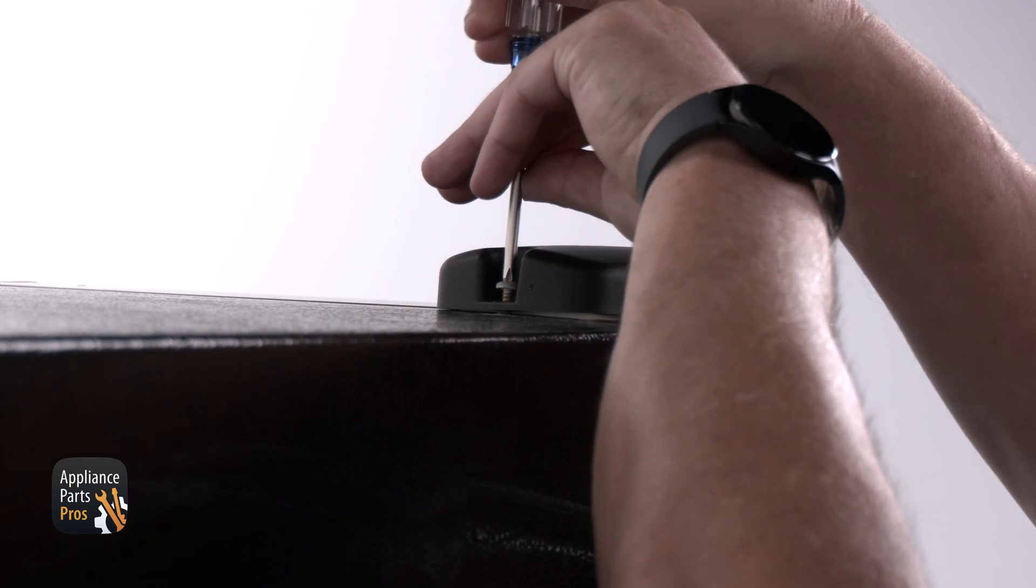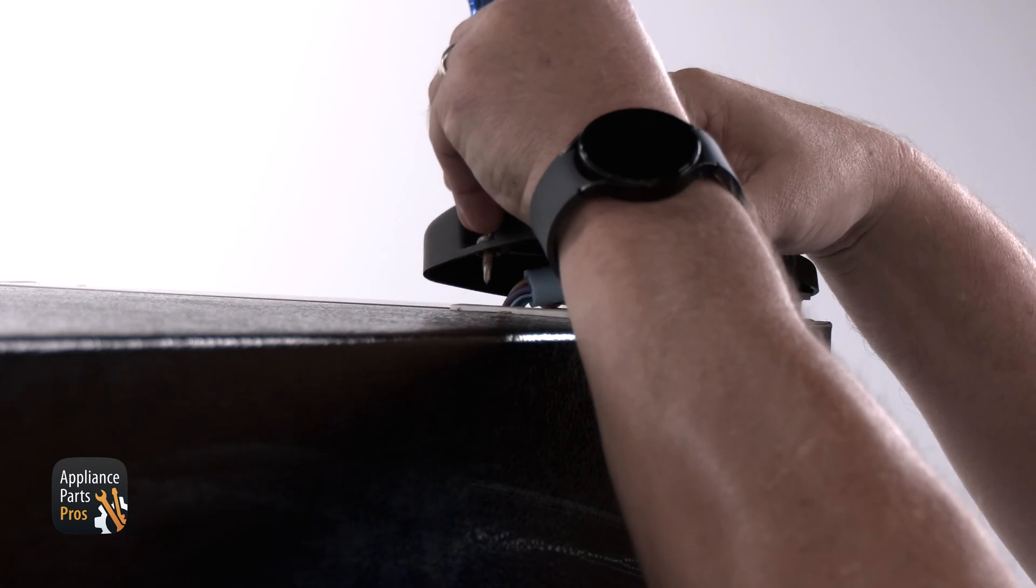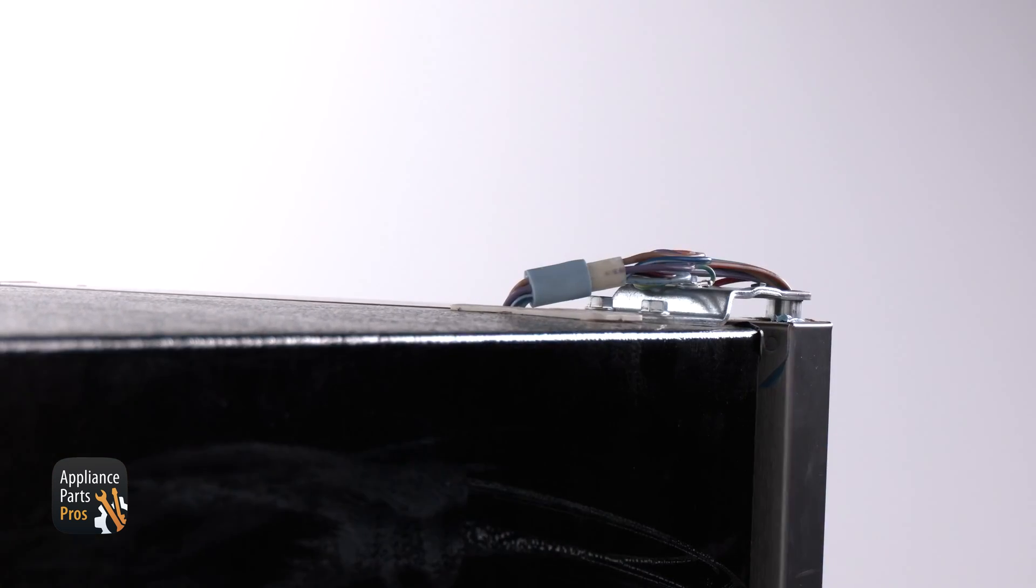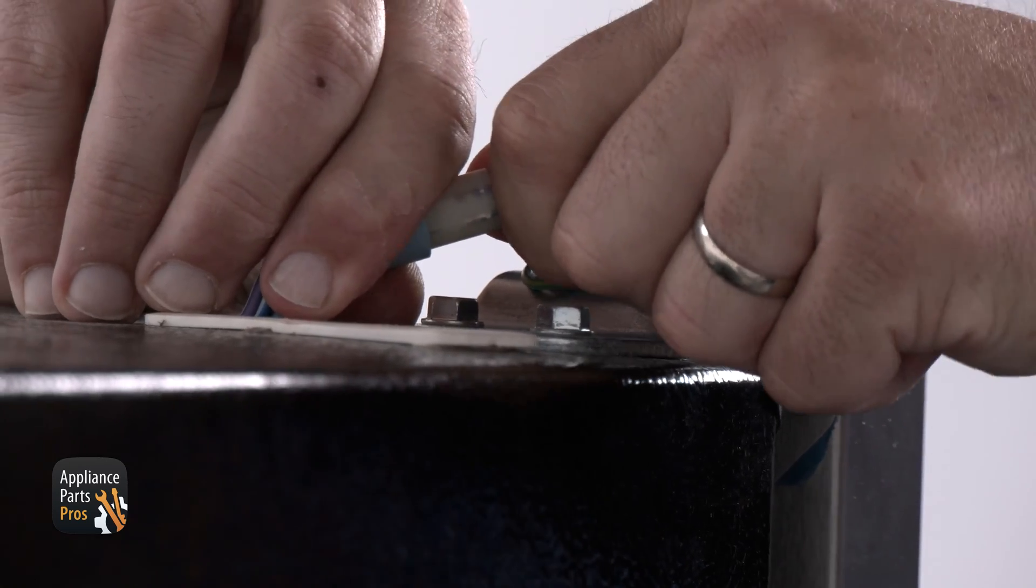You'll need to remove the hinge cover at the top of the door by removing the Phillips head screw securing it, and then you'll see a connector that you'll need to disconnect.